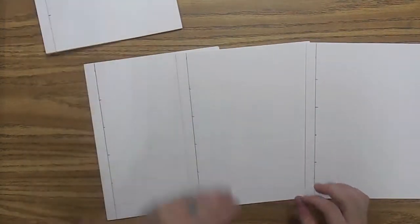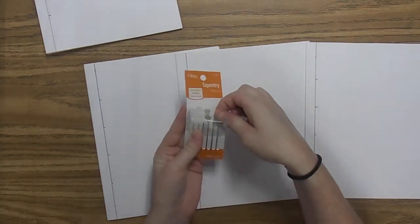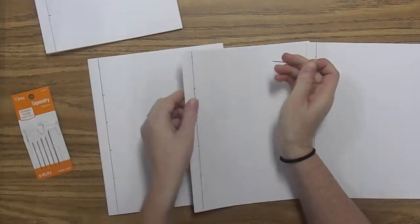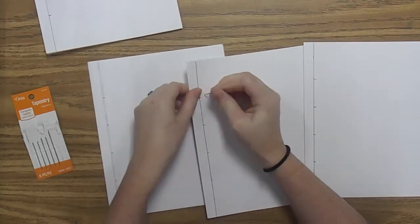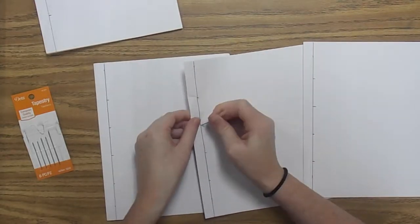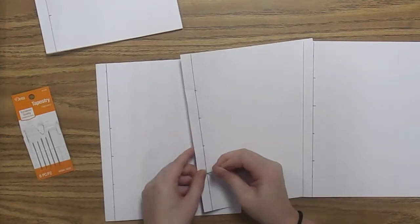All right, now that you have these edges marked, these little dots are going to become your markers for the needle holes. So, using one of our thicker needles, a tapestry needle, you are going to poke your needle through the paper at each one of these marks. You may need to wiggle the needle just a little bit to help it go through.